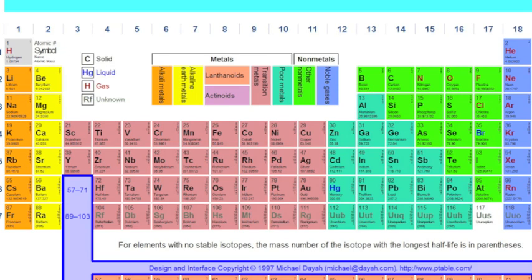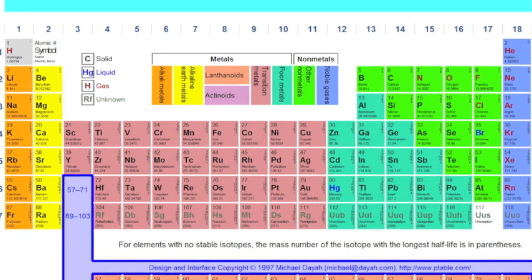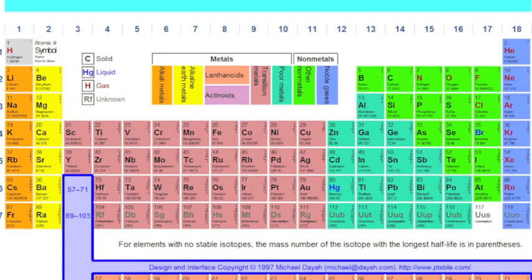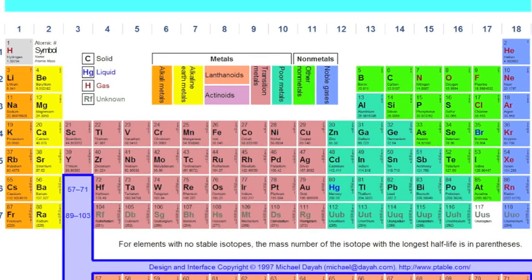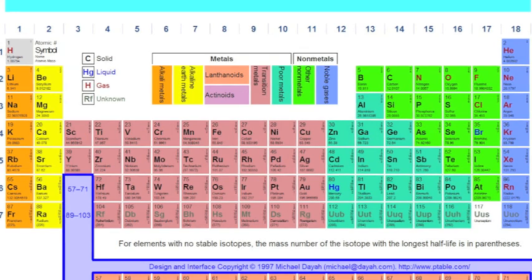After you have those 10 spots, create a picture for every single element and visualize that picture on that piece of furniture. For example, the first piece of furniture in that room, for hydrogen, see a hydrogen bomb exploding that piece of furniture.